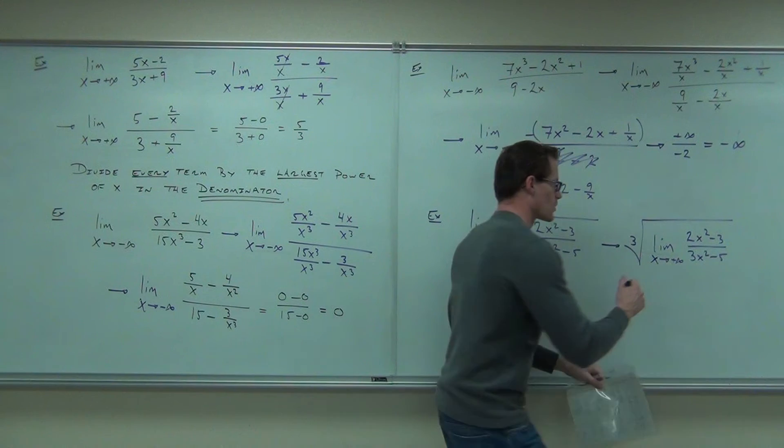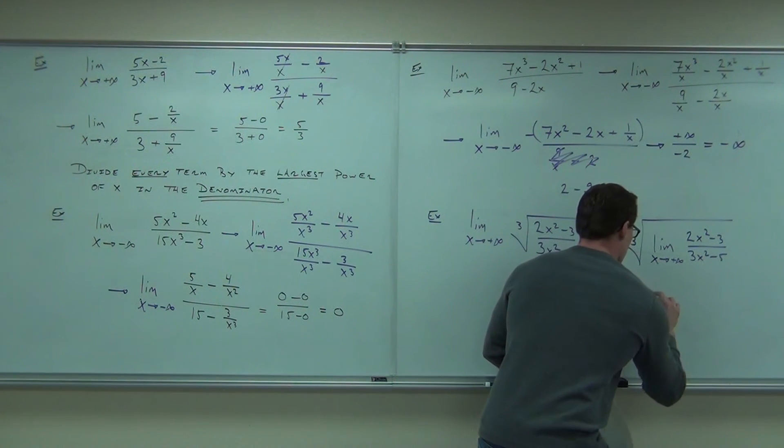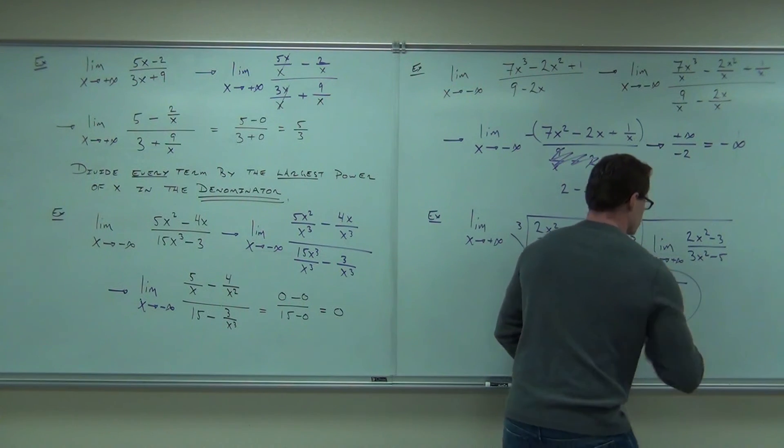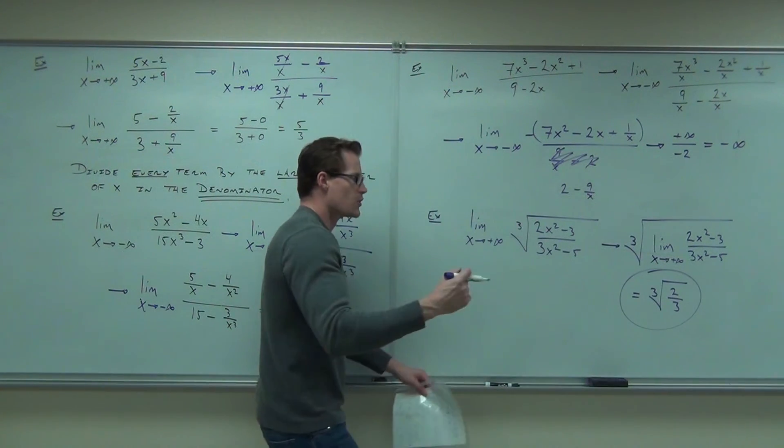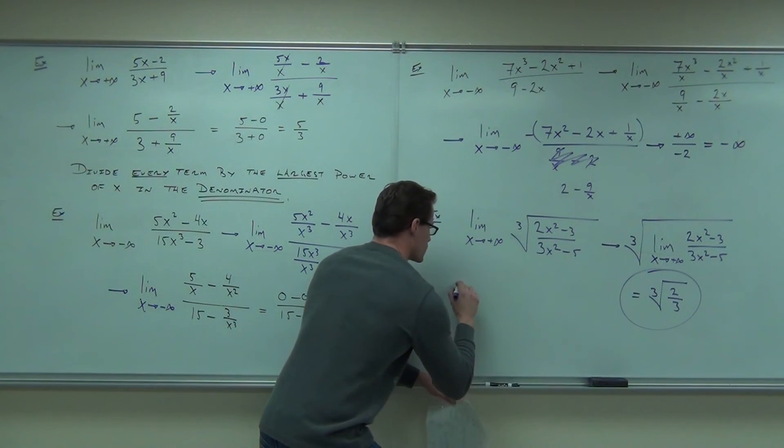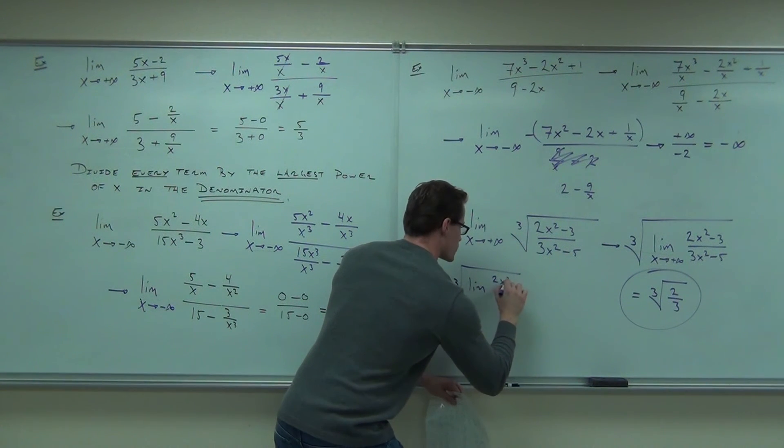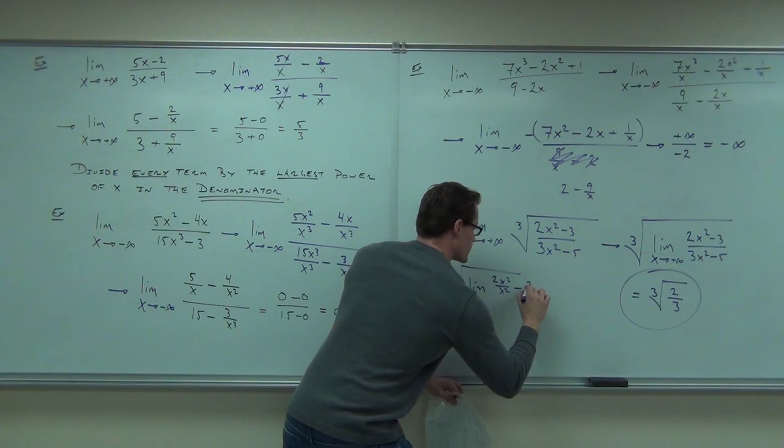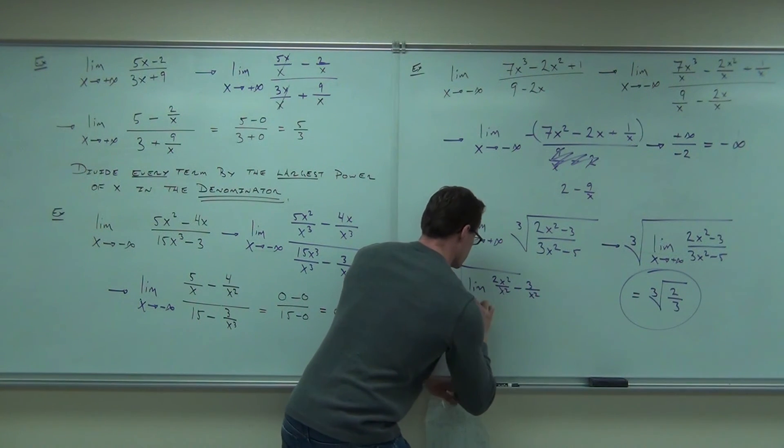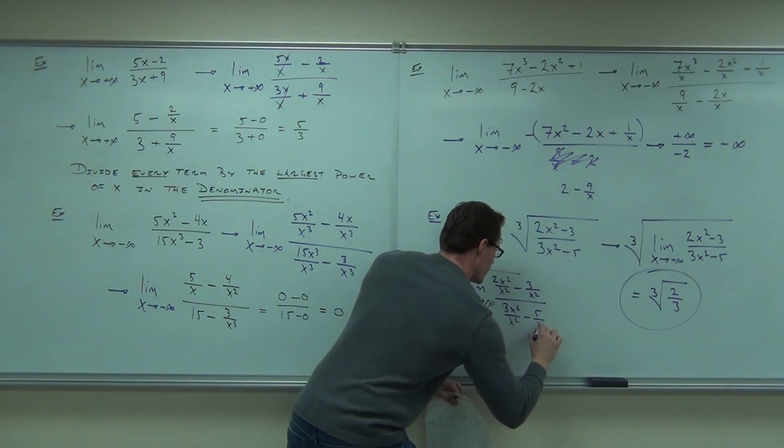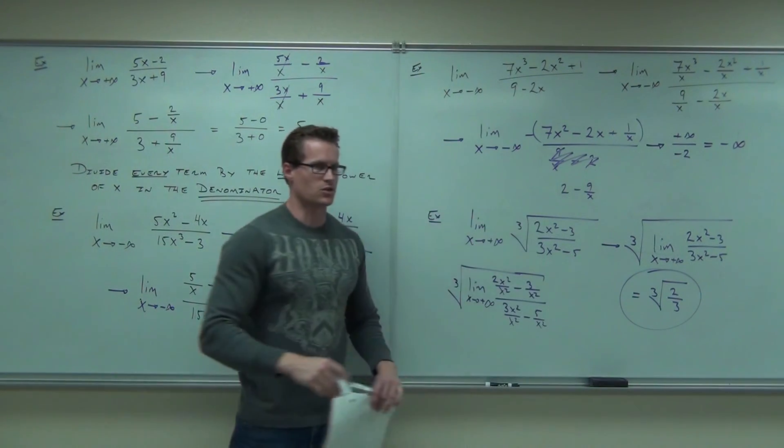So our answer here, after you show the work, would be a cube root of two-thirds. The work you show is this. You show a cube root 2x squared over x squared minus 3 over x squared all over that. That's what you show, but that's the answer you get.